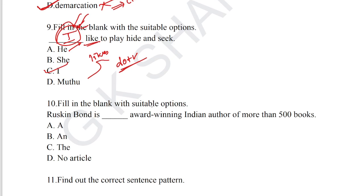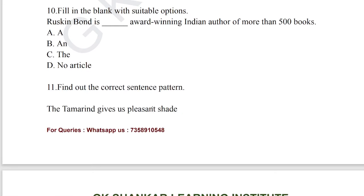Question number 10: fill in the blank with suitable options. 'Ruskin Bond is an award-winning Indian author for more than 500 books.' The question is asked from the grammar portion called articles. Option B is the correct answer for question number 10.